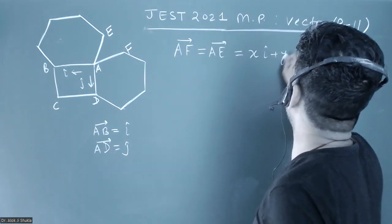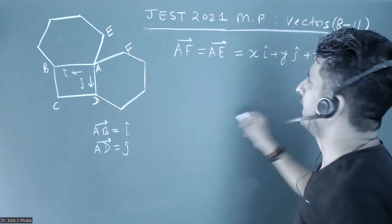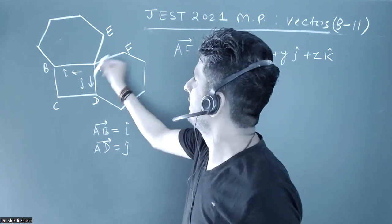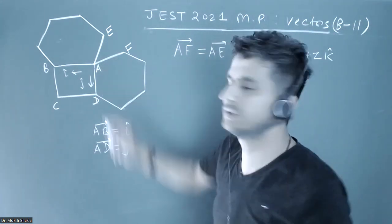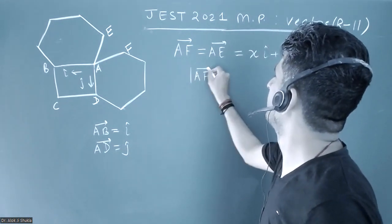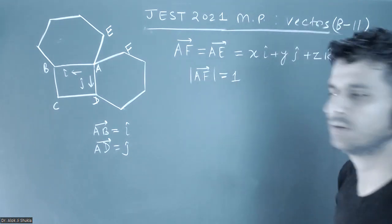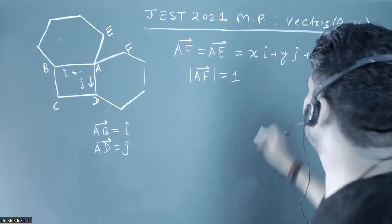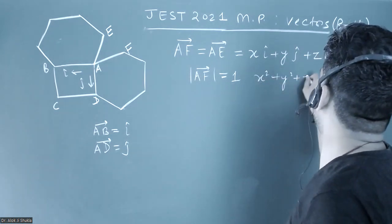Because this is the side of the hexagon and is also unity, the modulus of AF vector equals one. That means x² + y² + z² = 1, because this is a unit vector.